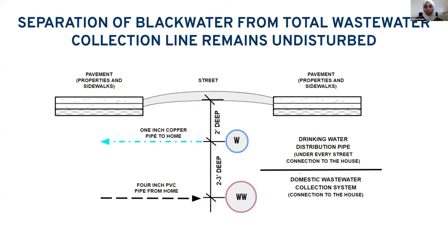We have the separation of blackwater from the total wastewater collection lines, which will remain undisturbed. We would like all potable water, blackwater, and graywater to be completely separate, requiring separate plumbing to allow them to exit the property. The potable water will enter the home through the street main via a one-inch copper pipe. The blackwater will exit the home via a four-inch PVC pipe. We will be using three check valves, backflow preventers, and shutoff valves to stabilize our design.